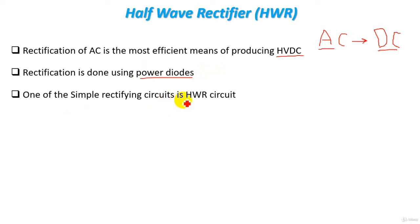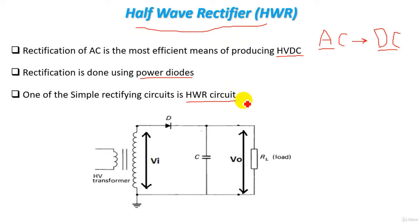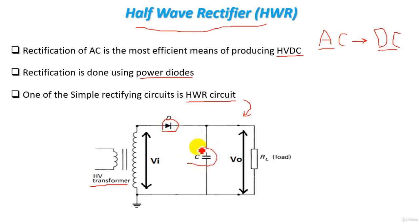One of the simple rectifying circuits is the half-wave rectifier circuit. The half-wave rectifier circuit consists of: first, a high voltage transformer; second, a power diode responsible for the rectification process; and third, a capacitor connected in parallel with the load R_L, where the load represents our insulator in the high voltage lab.